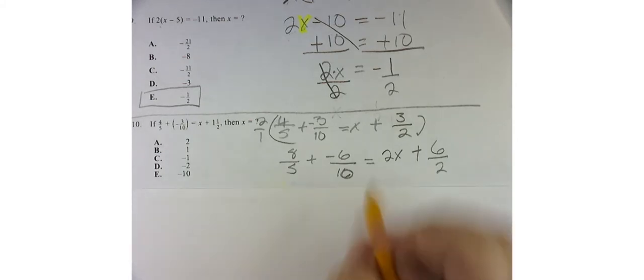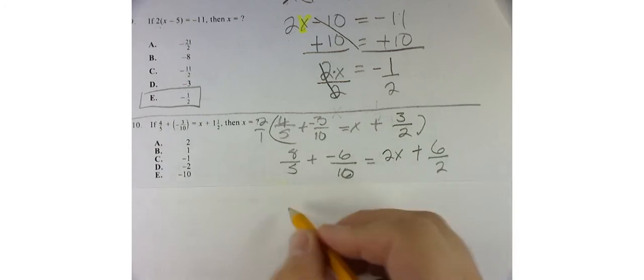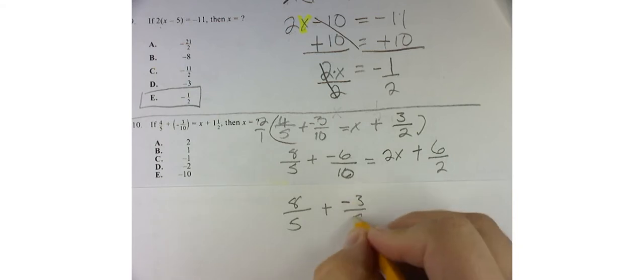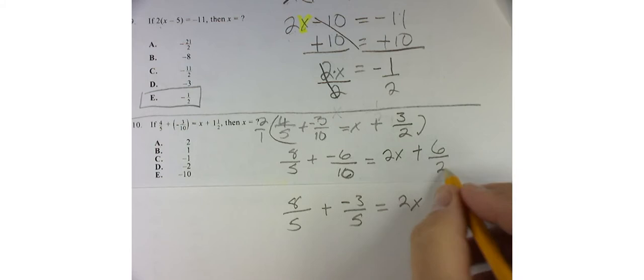Well, now I could do some reducing here. So the 8 over 5, not a whole lot I could do yet. Negative 6 over 10, I could say by dividing the top and bottom by 2, I get negative 3 over 5. And that's equal to 2x. And then 6 divided by 2 is just 3.